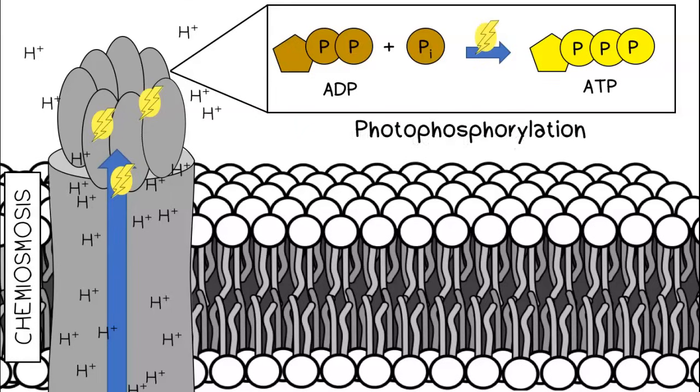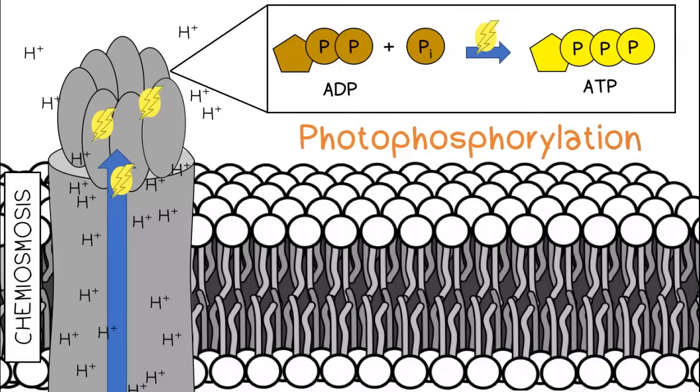Because the original source of energy came from the sun, this process is referred to as photophosphorylation. So, photophosphorylation by ATP synthase is powered by chemiosmosis, but the original source of energy came from light.